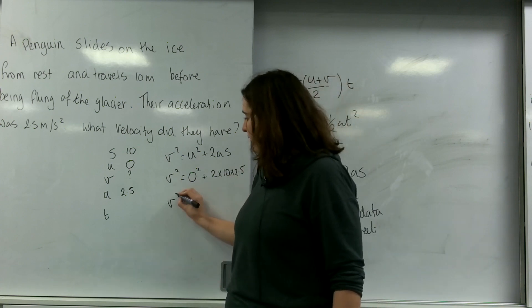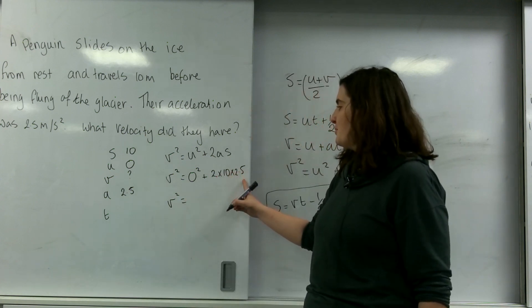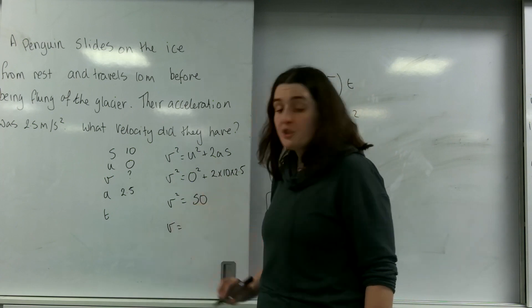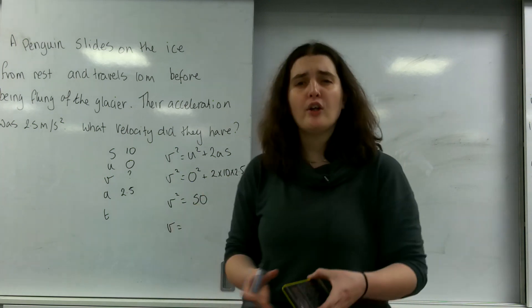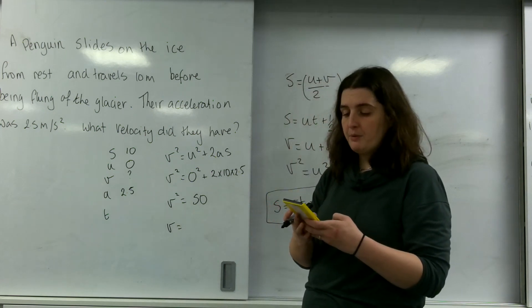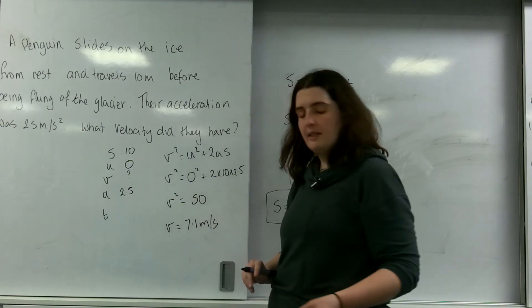So V squared equals 2 times 10, so 10 times 2.5 is 25 times 2 is 50. So V is the square root of 50. And you can't leave root 50. You must put that into decimal points. So the square root of 50 is 7.1 metres per second.